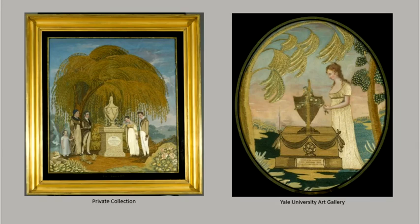While most flags in collections today are made of wool and cotton, some silk flags and banners can be found. They can be dyed, painted with ink or pigment, or embroidered. Due to their practical use, silk flags are often in delicate condition.